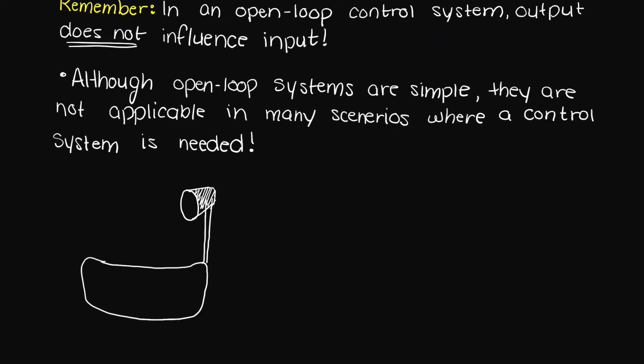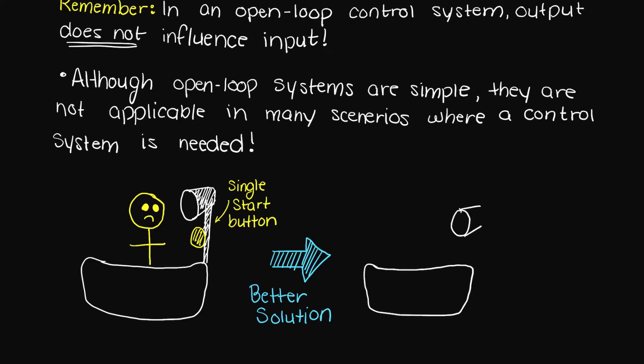Let's think of our shower's temperature. Obviously a simple push button start would not work as we want to allow each individual that uses the shower to select how warm they want the water and how long the water runs for. So in summary, an open loop control system is when the input is not affected by the output of the control system.